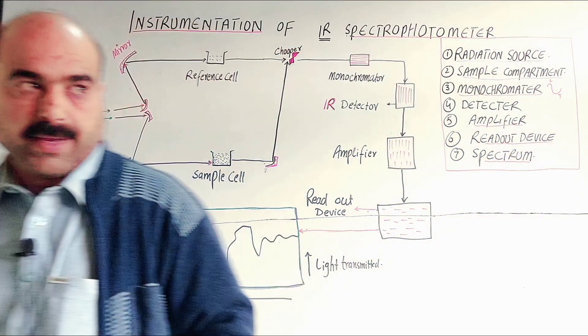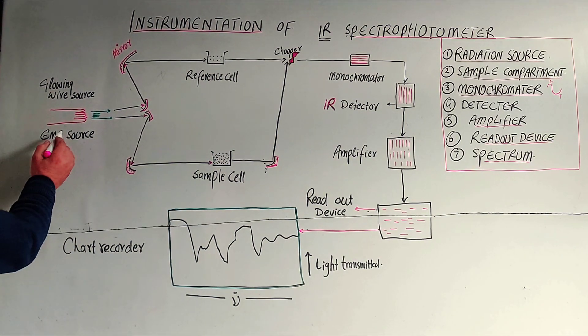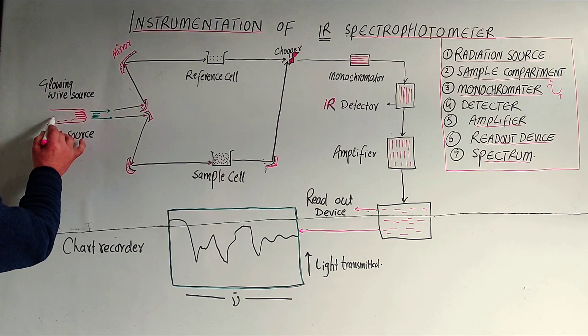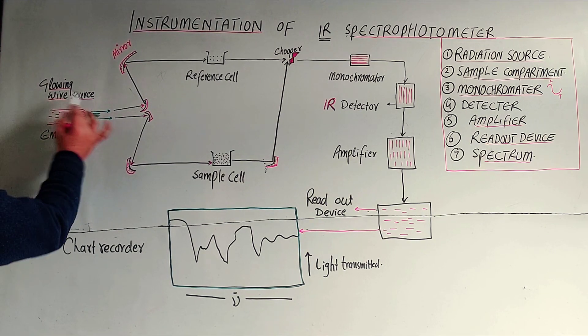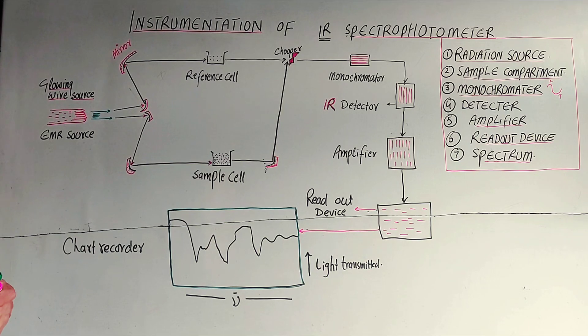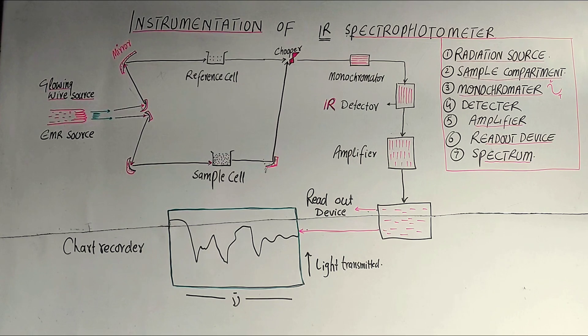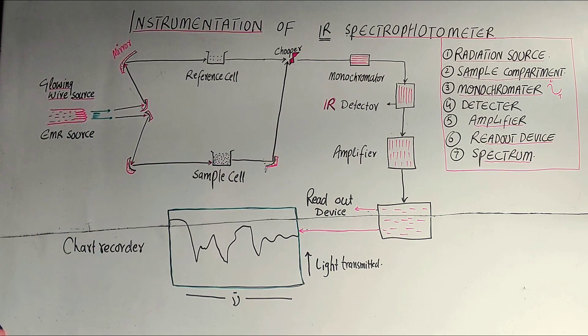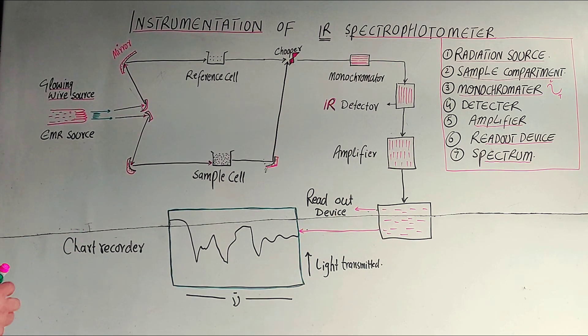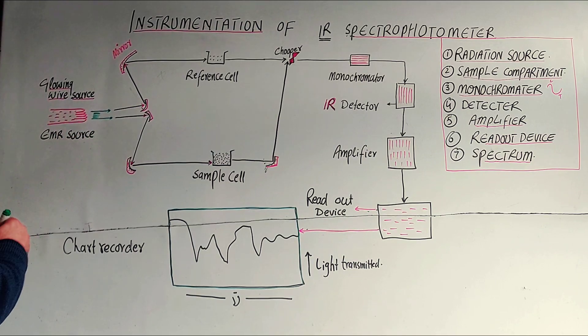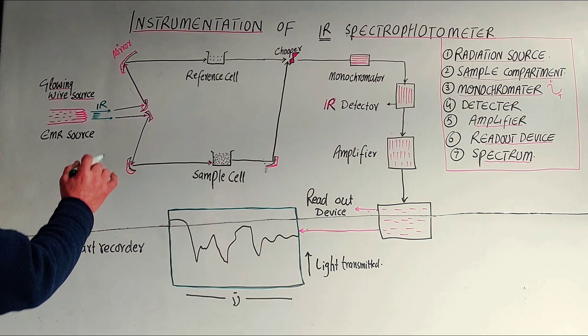One by one, let's discuss the instrumentation. First one is EMR source, electromagnetic radiation source. This is a glowing wire source or hot wire that emits electromagnetic radiation. For IR spectrophotometer, the IR range will be used. The IR radiations will emit and will be used.